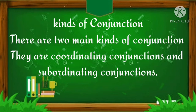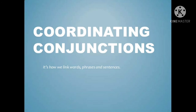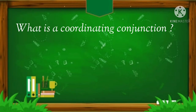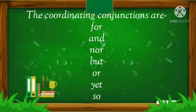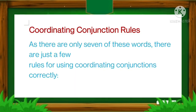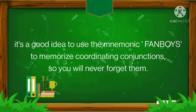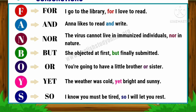There are two main kinds of conjunctions: coordinating conjunctions and subordinating conjunctions. A coordinating conjunction joins together words, phrases or clauses of equal rank or independent statements. The coordinating conjunctions are: for, and, nor, but, or, yet, so — there are only seven of these words. It's a good idea to use the mnemonic FANBOYS to memorize coordinating conjunctions so you will never forget them. The first letter of each word makes the mnemonic FANBOYS. It is easy to remember.